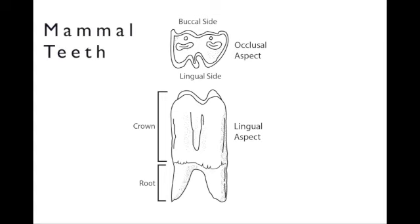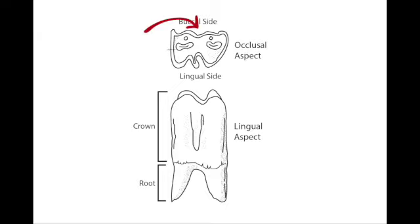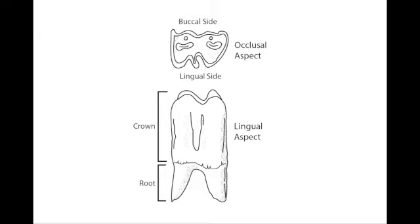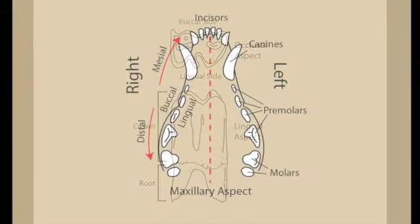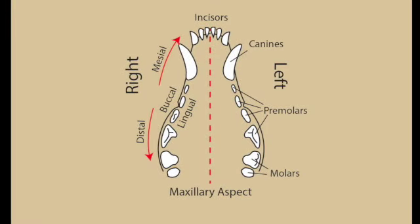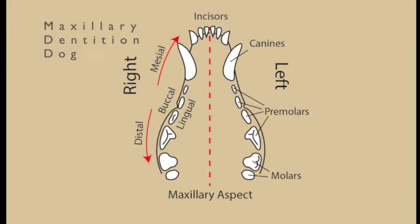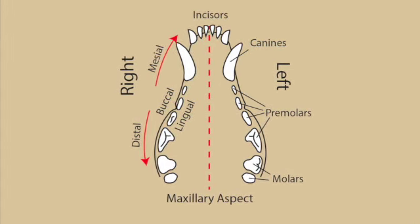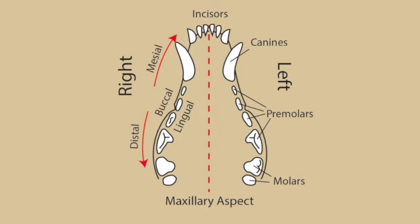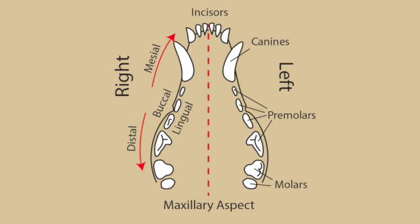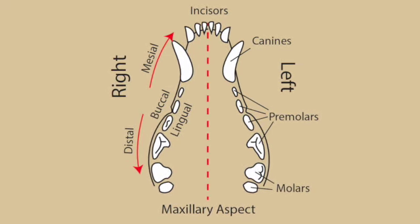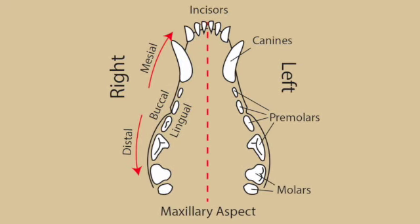There are also standard terms for the surfaces and parts of teeth. The surface towards the cheek is called the buccal side, and the inner or tongue side is called the lingual side. The chewing surface of a molar is called the occlusal surface. Other major parts of the tooth include the crown and the root. There are also terms for orienting and locating teeth within an animal's mouth — using the upper or maxillary aspect of a dog's mouth, mesial means towards the midline of the mouth, and distal means away from the midline, so that molars are more distal than canines or incisors.